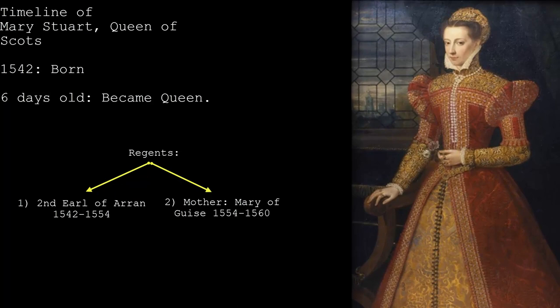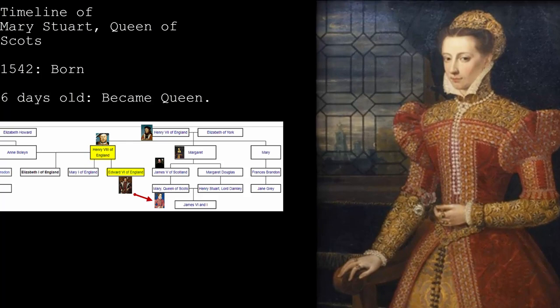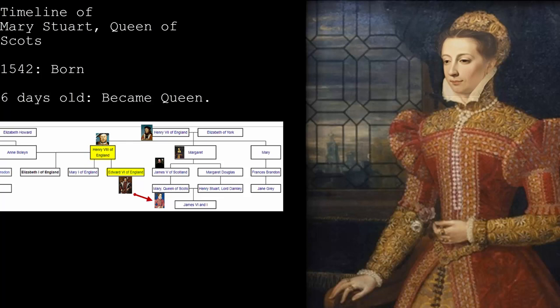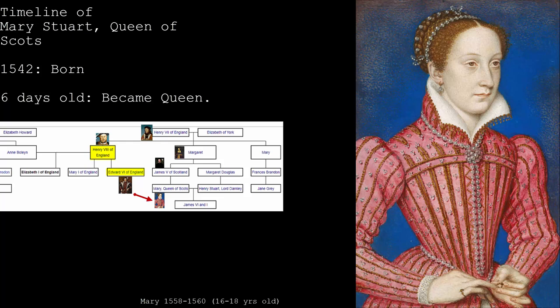Henry the Eighth wanted to marry his son Edward to Mary of Scots in hopes of a union between Scotland and England. This was called Henry's 'rough wooing' because he tried to use force and began a series of raids in Scotland.